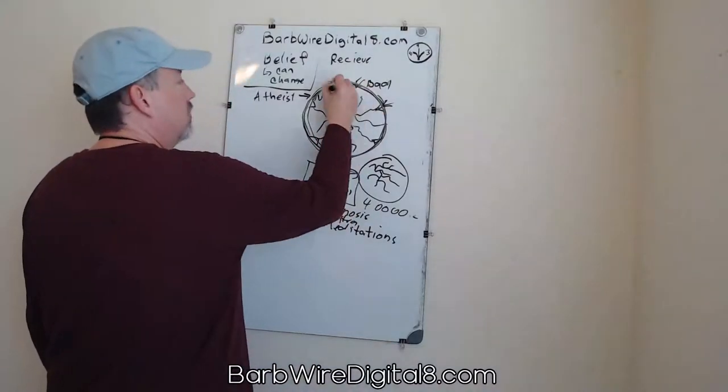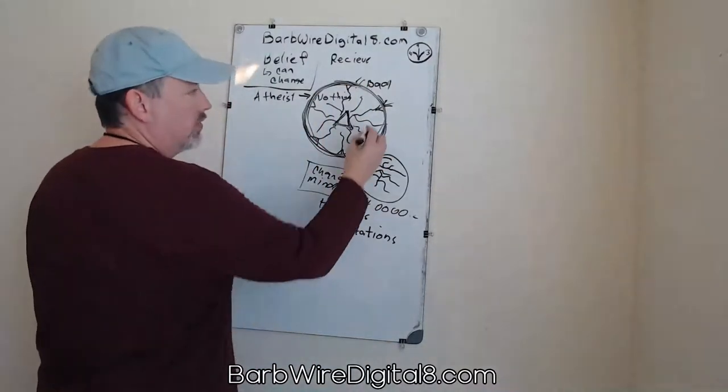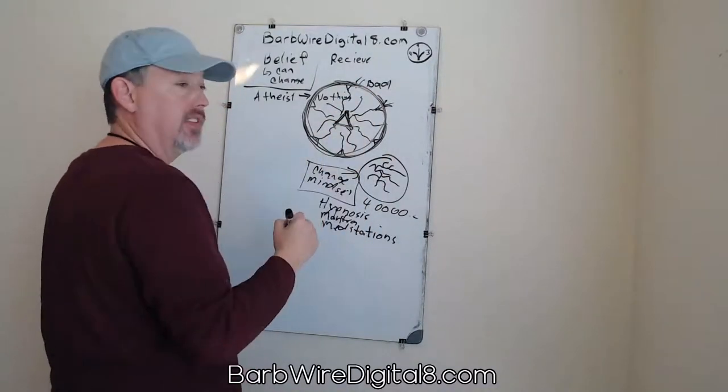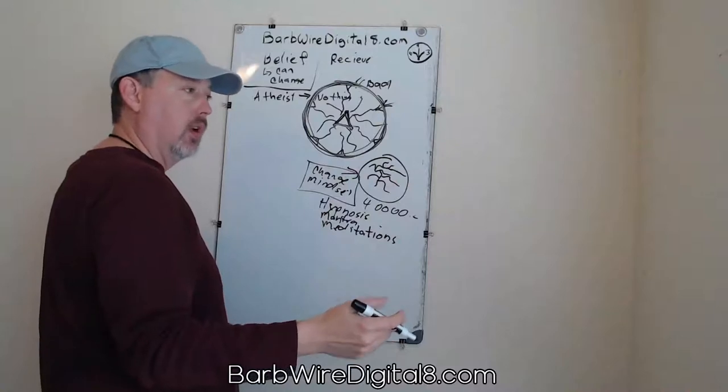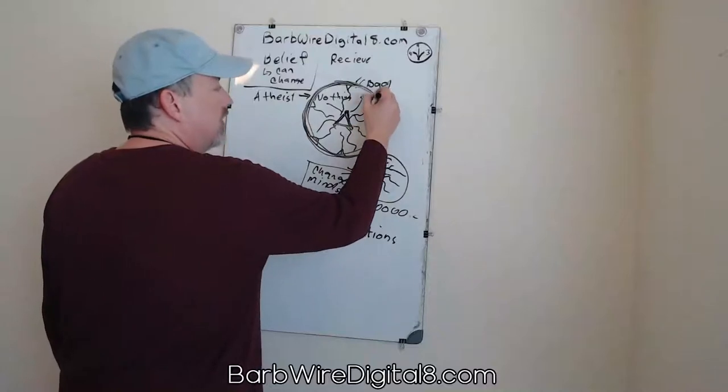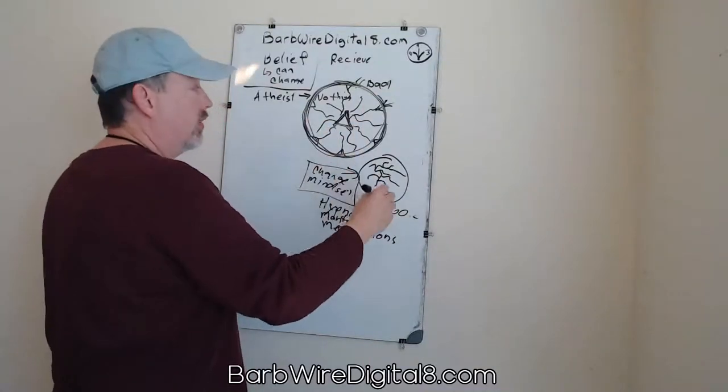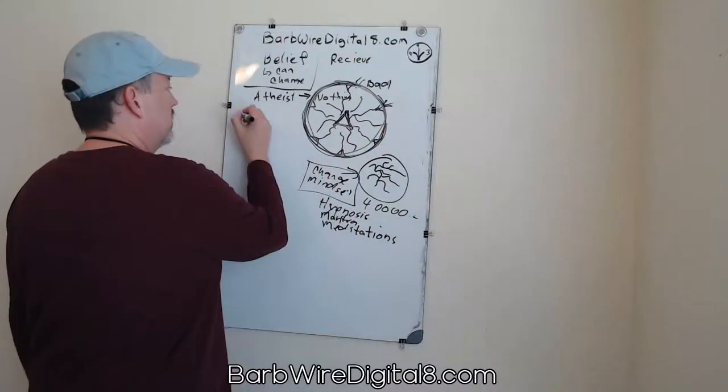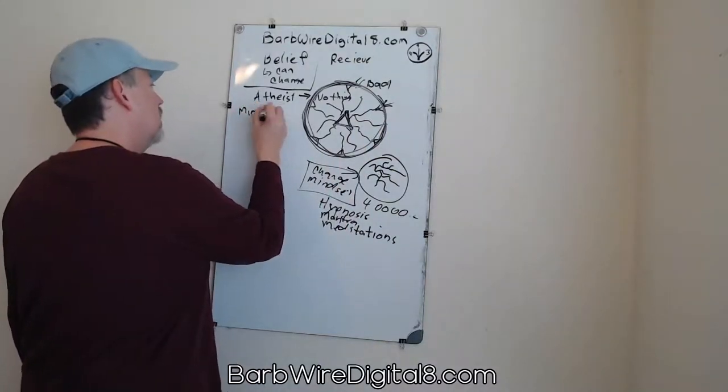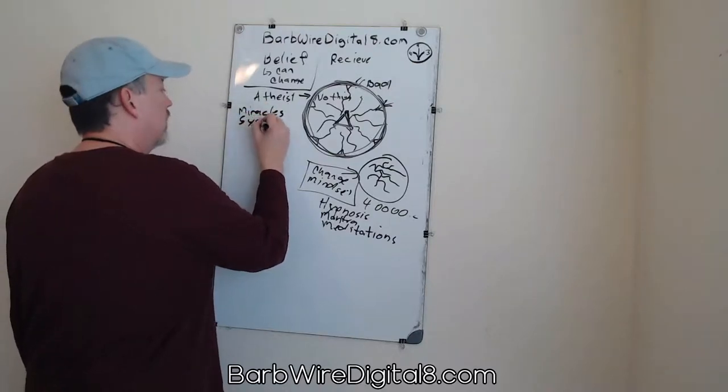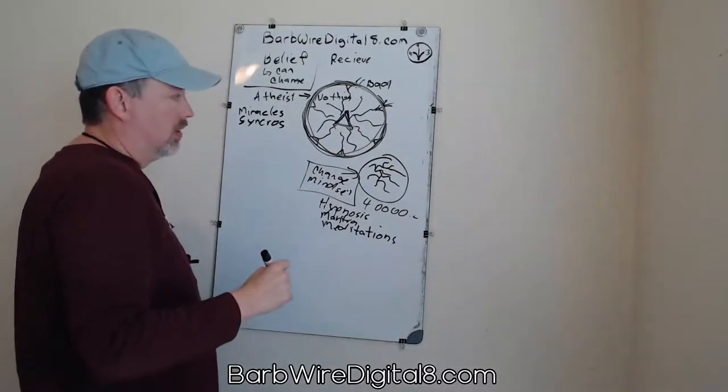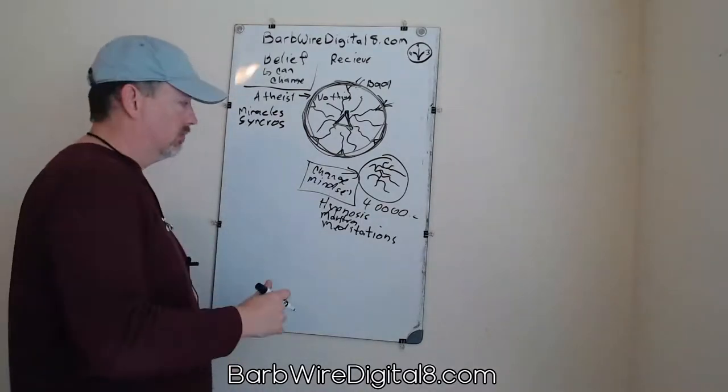Once you change this, reality around you has to change. So when you have all these awful things that are happening, now you got this new positive mindset. That's why people talk about being positive. It's more than just being positive. This will start to shift, and it can shift very quickly. And when reality starts to shift, that's when you get miracles. That's what the Bible refers to as miracles or synchronicities if you're a science person. We'll call them synchros. That's the principle of vibration.